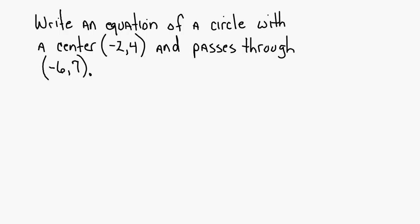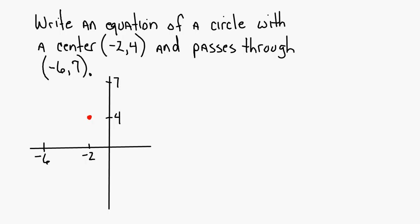Based on what you just did, what are you missing? You're missing the radius. So if they give you the center and they give you a point that the circle passes through, graph the information. The center of the circle is at (-2, 4), and the circle passes through (-6, 7). That point is on the circle. If you connect those two points, that represents the radius.